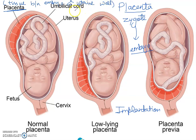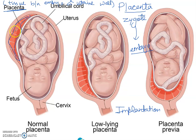Placenta is a disc-shaped temporary connection. As you can see in this picture, this is the placenta area. So this is a disc-like structure which is a temporary connection between the mother and the developing embryo.